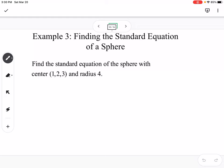So our example, find the standard equation of a sphere with center at (1, 2, 3) and radius 4. That would just be (x-1)² + (y-2)² + (z-3)² = 16.